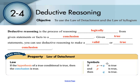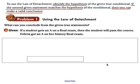Let's take a look at how we would use the law of detachment to solve problems. You will be identifying the hypothesis of the conditional statement, and we're always going to have a second given statement after our conditional. If that second given statement matches the hypothesis, we can make a valid conclusion. If it does not match the hypothesis, we cannot make a valid conclusion.